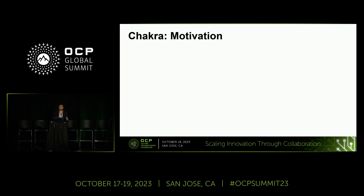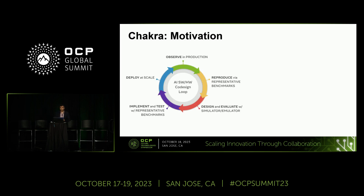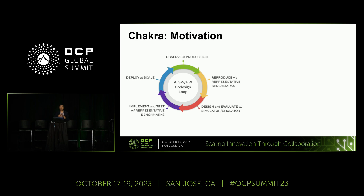Chakra comes from the motivation that we need to design next-generation systems, and benchmarking is a very important challenge. The co-design loop works like this: you observe workloads running in production on a deployed system, reproduce their behavior to identify bottlenecks in communication fabric or compute, design and simulate the next-generation system, then implement, test, and deploy it before running with next-generation workloads — and the cycle continues.